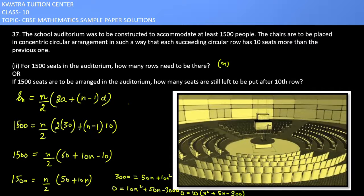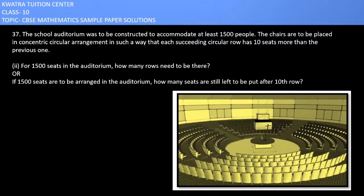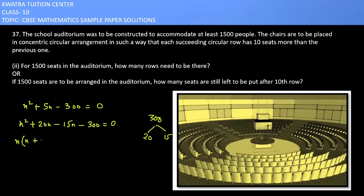Equate it to 0. n squared plus 5n minus 300 equals 0. We need to find n by middle term splitting. Split 5n, it would be 20n and minus 15n. n squared plus 20n minus 15n minus 300 equals 0. Take common n from the first two terms, n plus 20. Take common minus 15 from the last two terms, n plus 20. So you have two factors, n plus 20 and n minus 15.